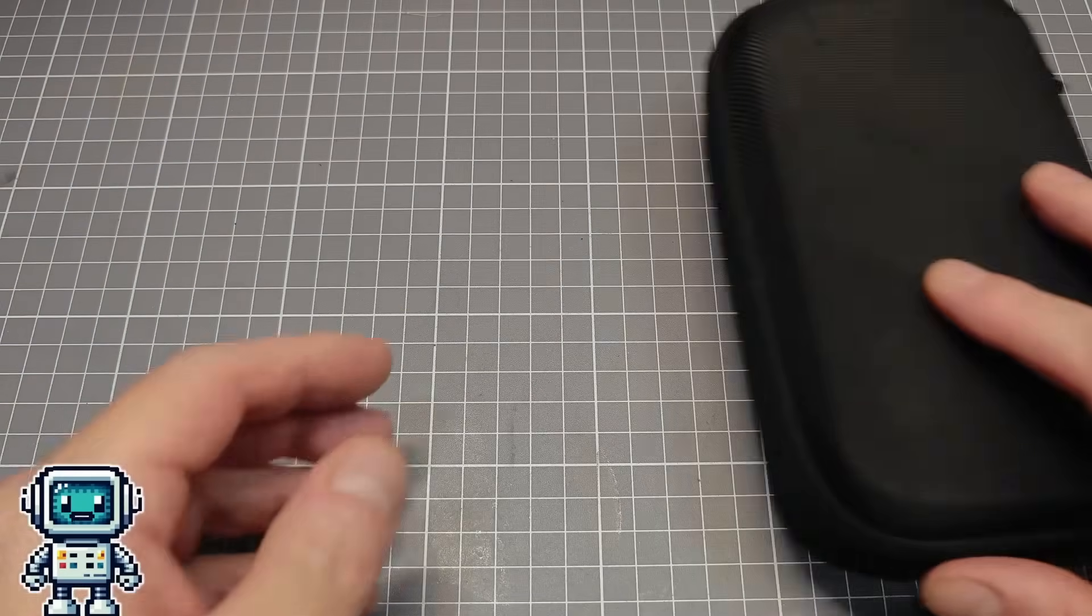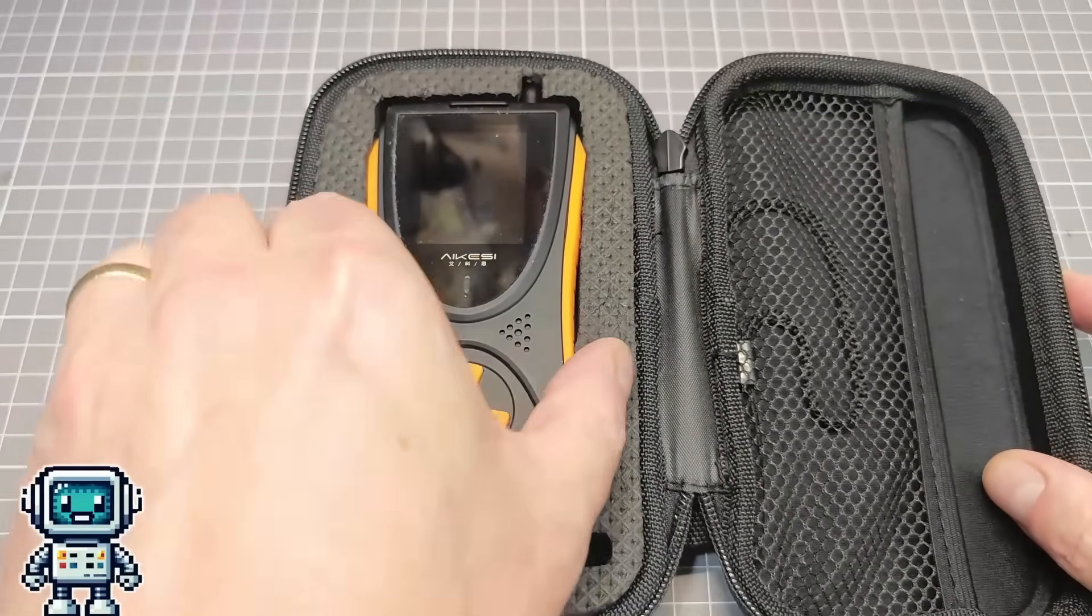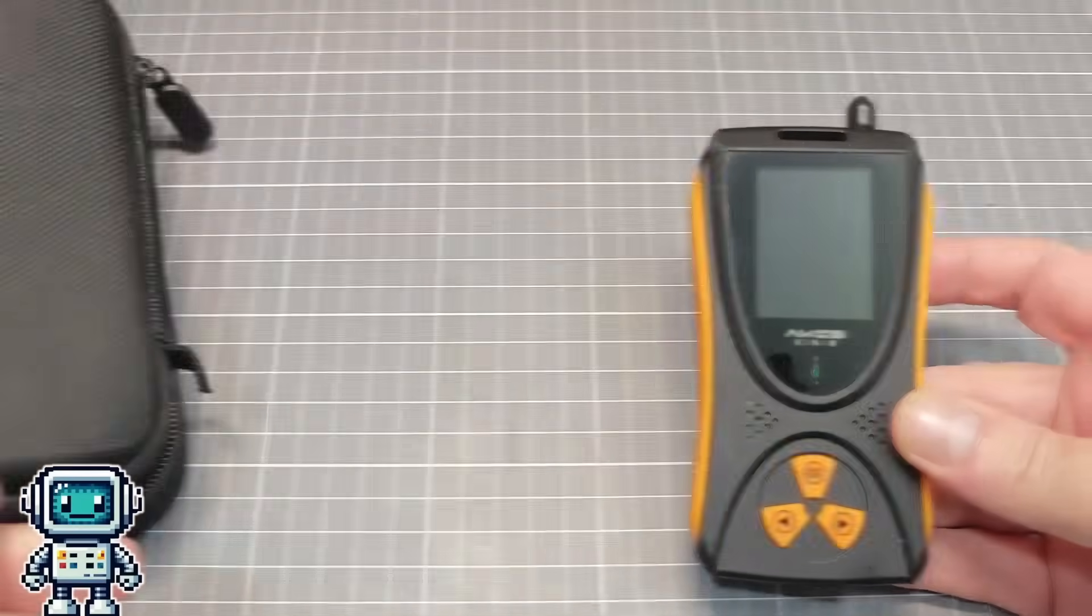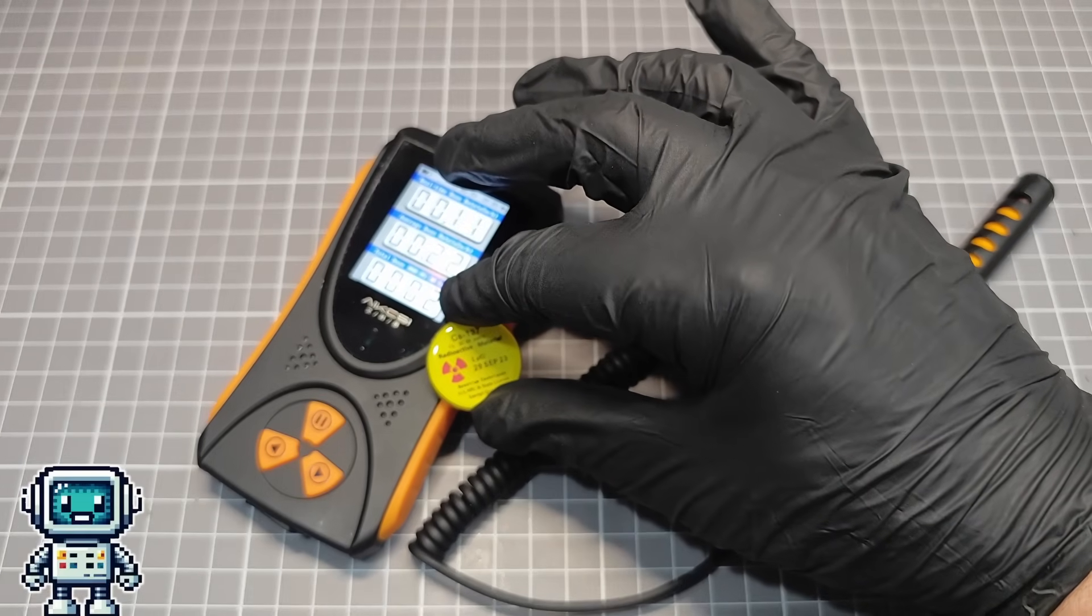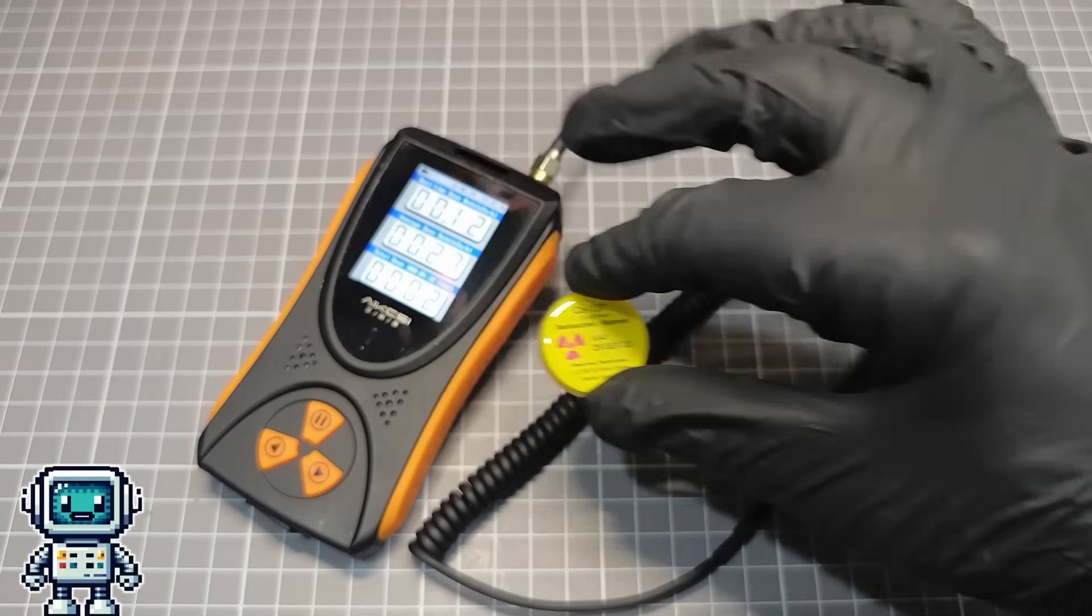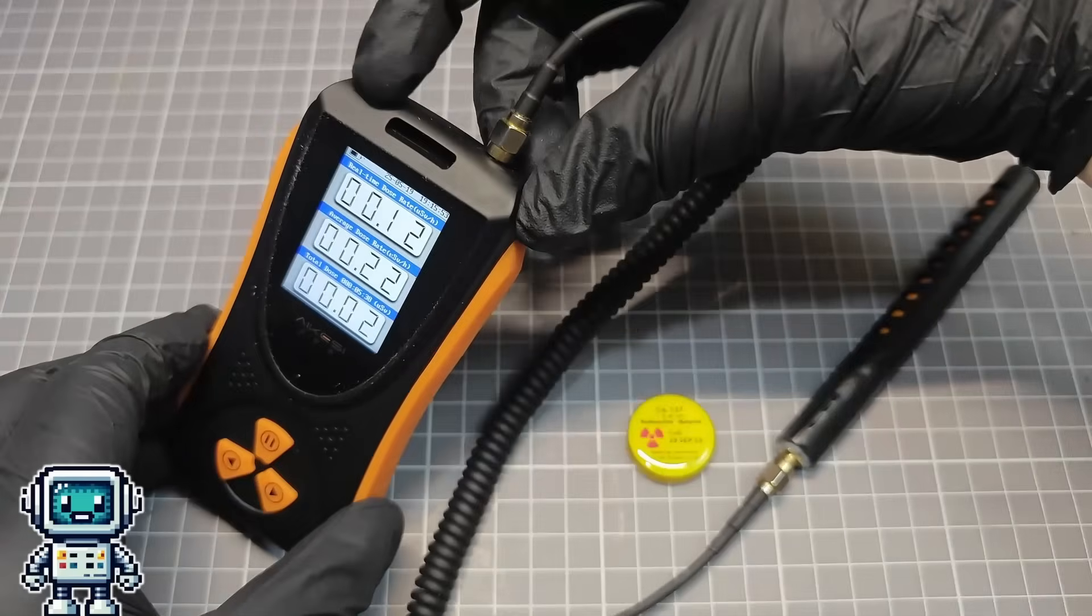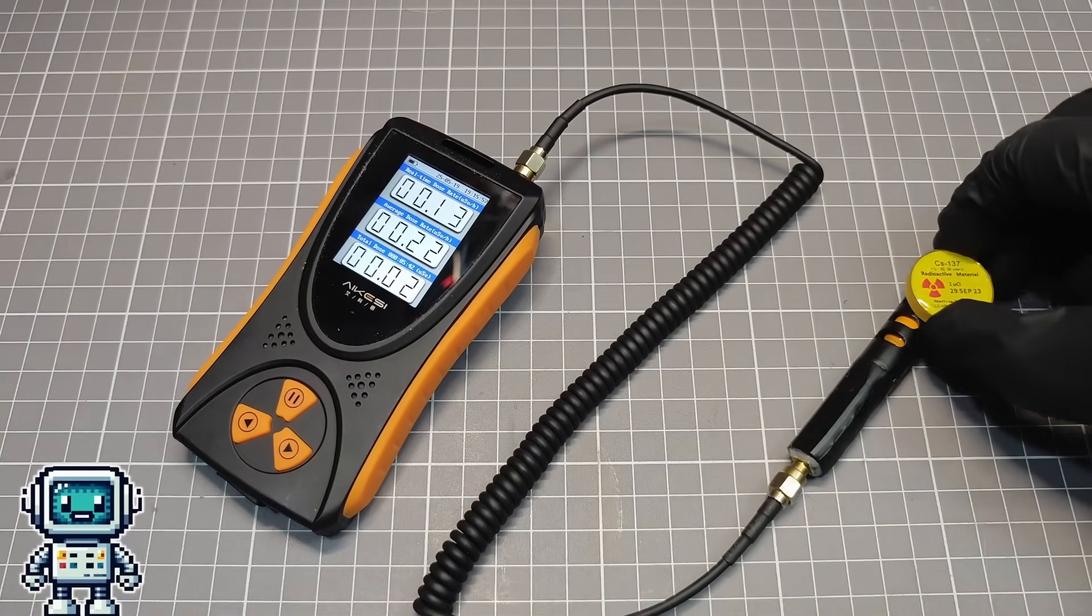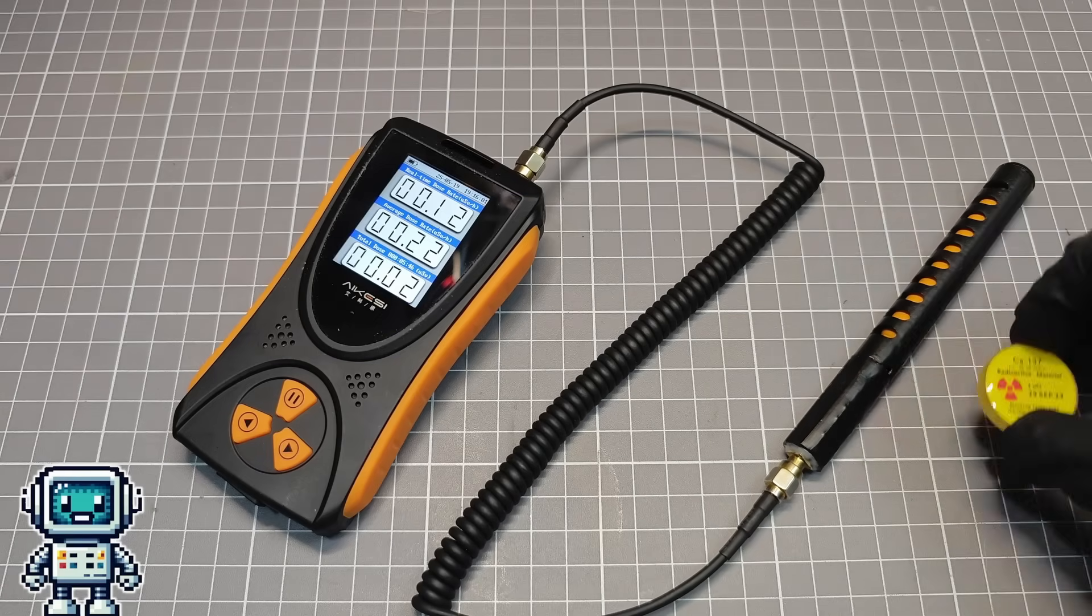Before we get into testing this new probe, we wanted to just touch on our previous experience at adding an external probe to a cheap Geiger counter. This HFS10 device comes with an internal Geiger-Muller tube that is frankly little better than a piece of dog turd. So, we added a better tube as an external probe that can be switched in and out of circuit. This gave this device a significant boost in its performance.